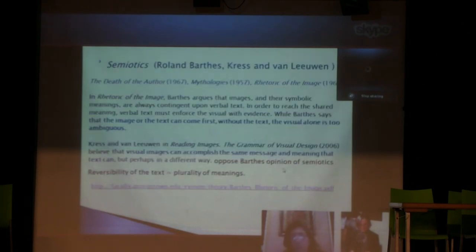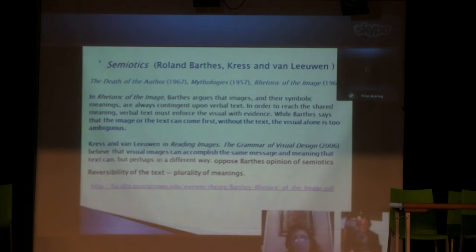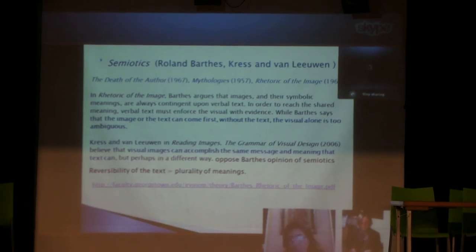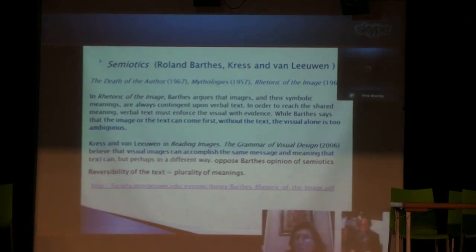One of the key figures of semiotics is Roland Barthes. In the late 1960s, in Rhetoric of the Image, Barthes argues that images and their symbolic meanings are always contingent upon the verbal text. In order to reach shared meaning, verbal text must reinforce the visual with evidence. While Barthes says that the image or text can come first, without text the visual alone is too ambiguous — they still rely on words to achieve complete meaning.